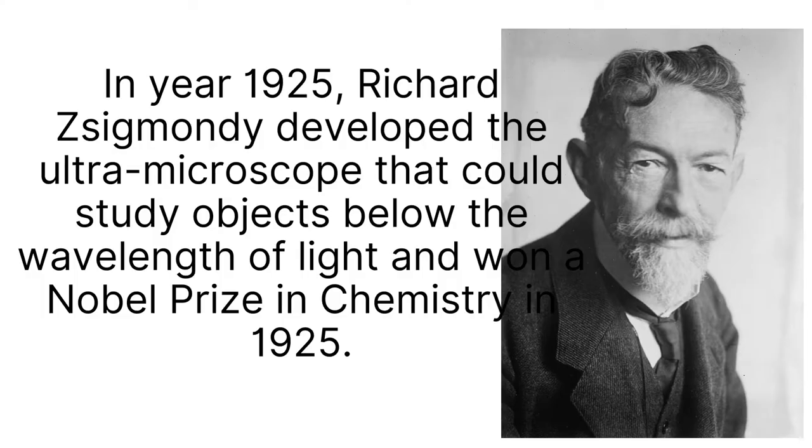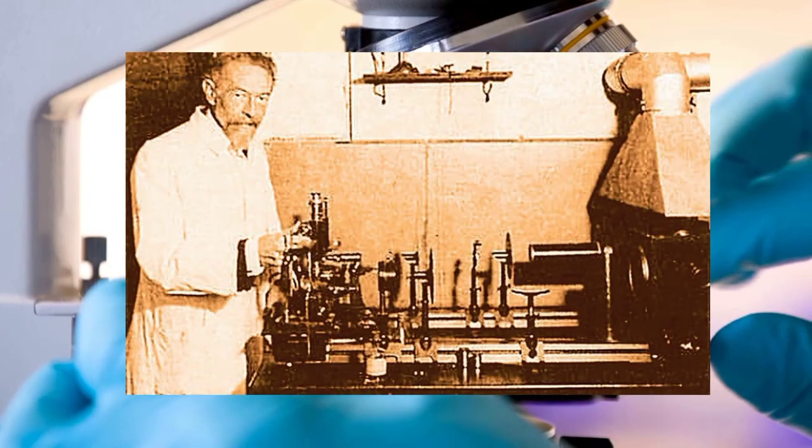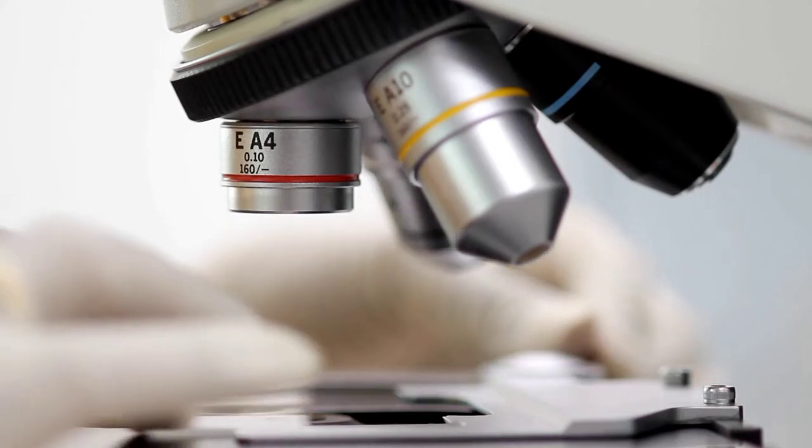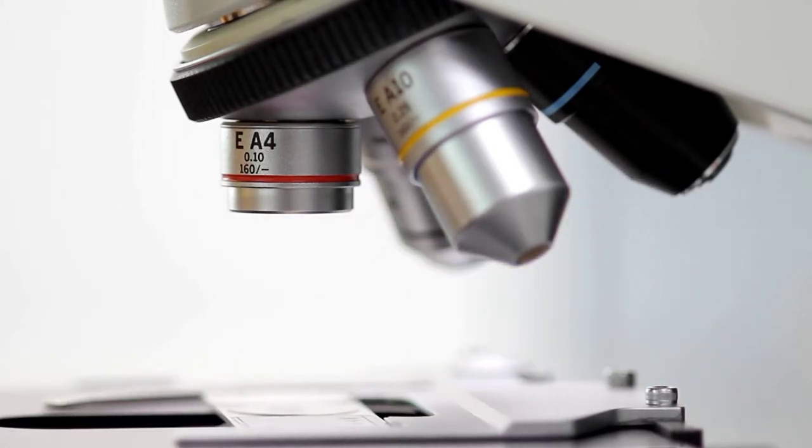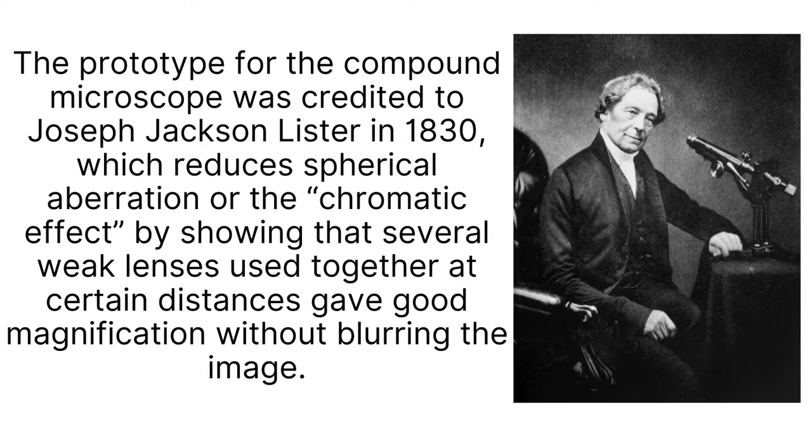In 1903, Richard Zsigmondy developed the ultramicroscope that could study objects below the wavelength of light and he won the Nobel Prize for Chemistry in 1925. Richard Zsigmondy invented the phase contrast microscope in 1932 that allowed the study of colorless and transparent biological materials for which he won Nobel Prize in Physics in 1953.